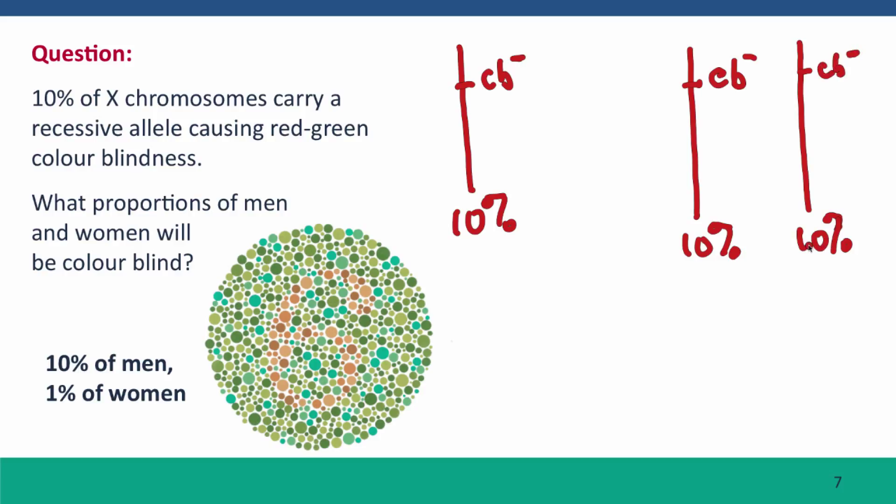We multiply the probabilities because all of these women, 10% of the total population, only 10% of these women are going to have two defective alleles. So it's 10% of 10%, which is 1% of women, will be homozygous for the colorblindness allele.